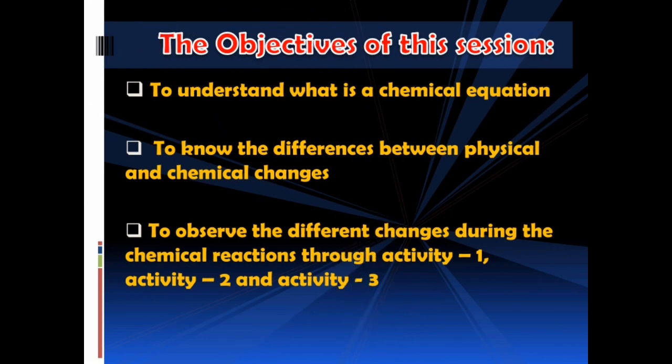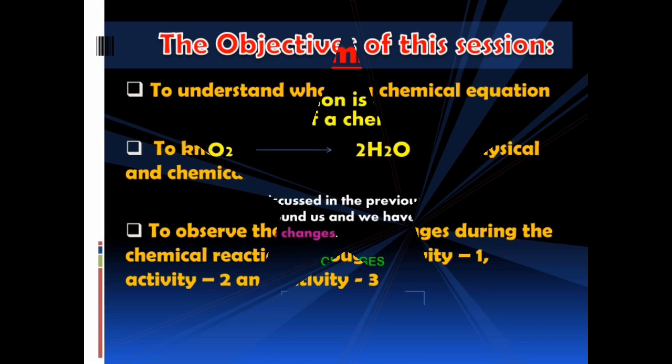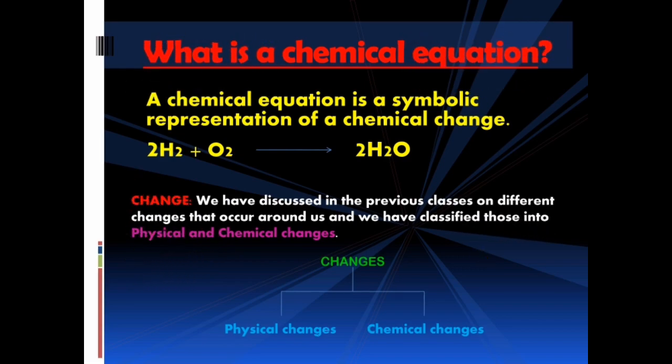The objectives of this session are listed here. First, to understand what is a chemical equation. Next, to know the differences between physical and chemical changes. Then, to observe the different changes during chemical reactions through Activity 1, Activity 2, and Activity 3. First, we shall discuss what is a chemical equation.